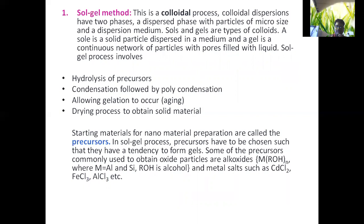The sol-gel process involves four steps: step one is hydrolysis of precursors; step two is condensation followed by polycondensation; step three is allowing gelation to occur; and step four is the drying process to obtain solid material. The starting material used for the synthesis of nanomaterials is called the precursor material. Precursors must be chosen such that they have a tendency to form gels.